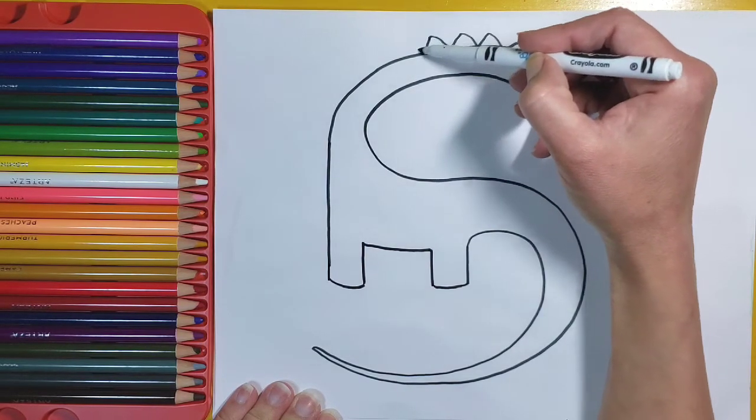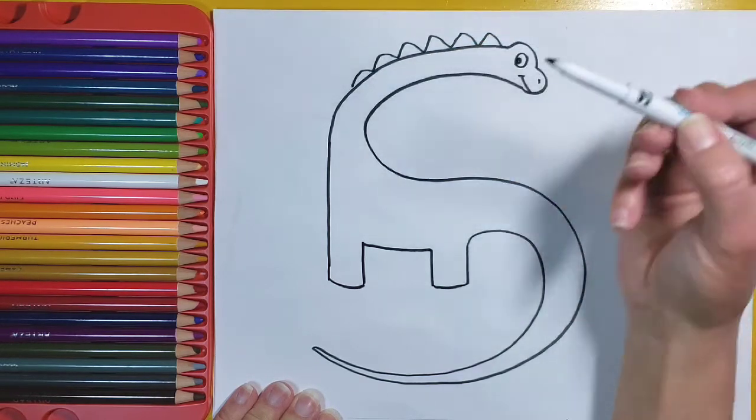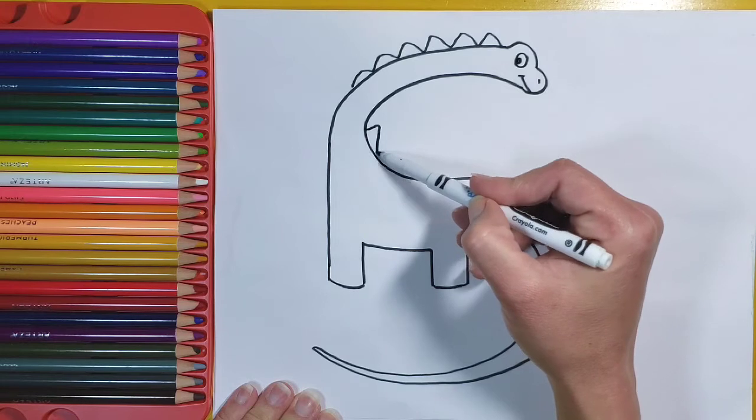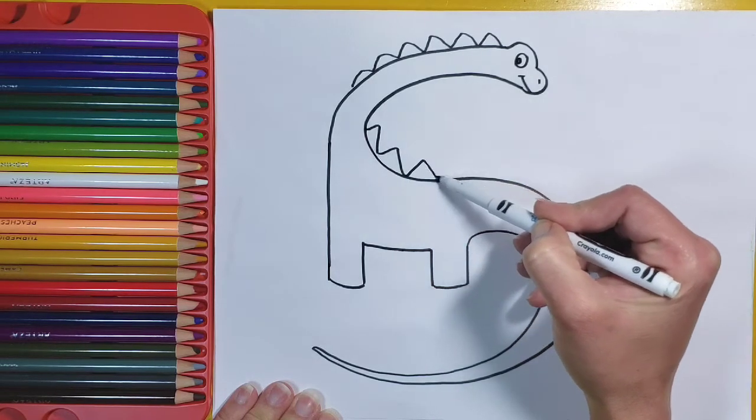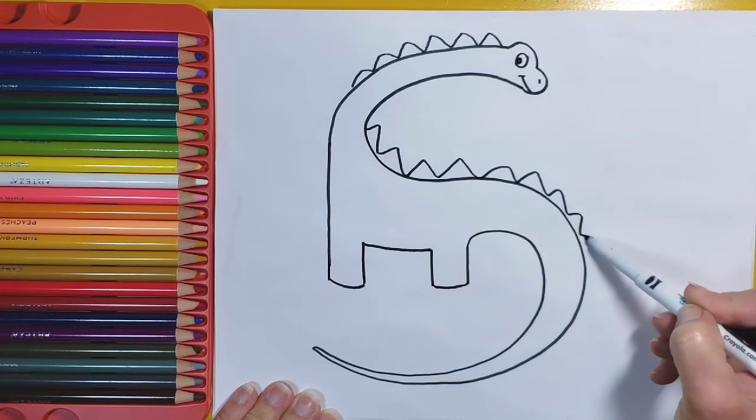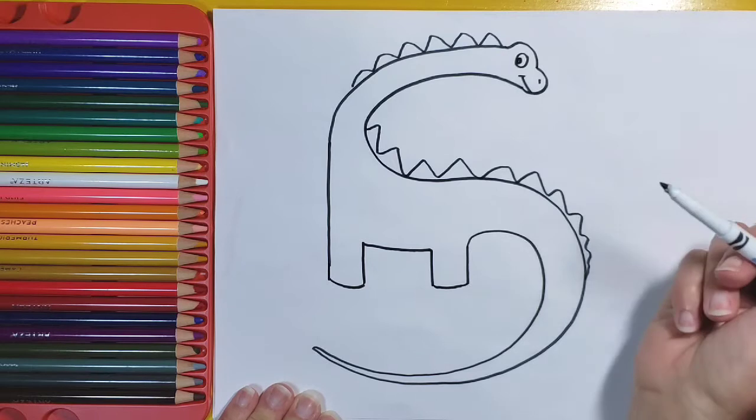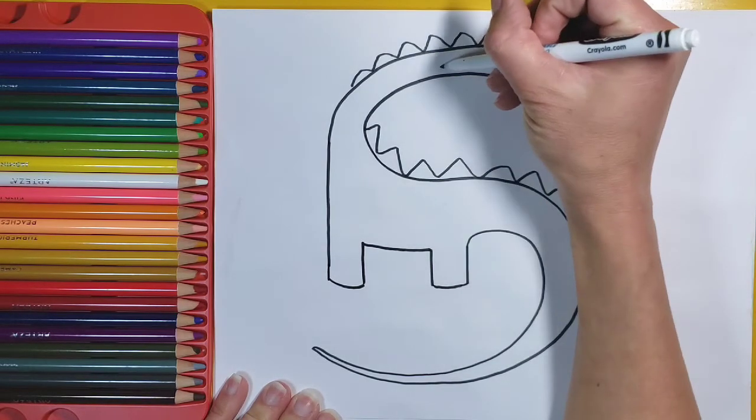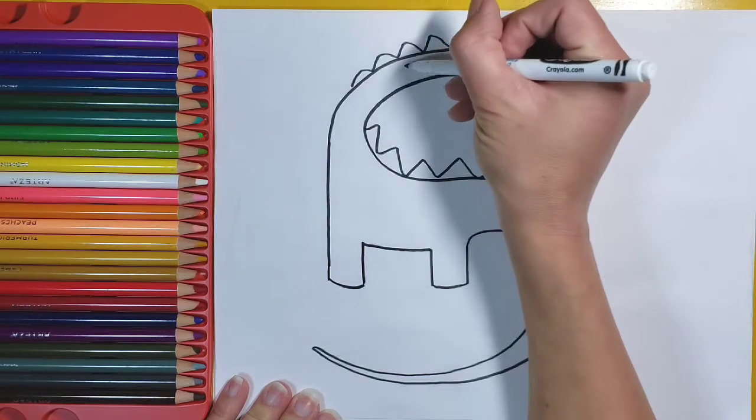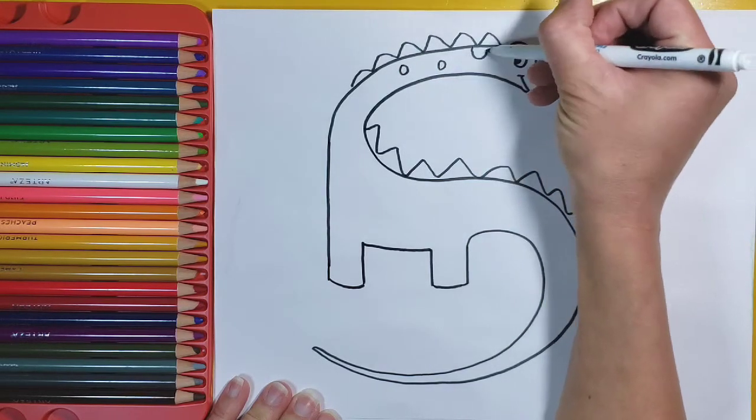That kind of go like this around on the back of the dinosaur like that. And then, I mean, if you want to, you can get creative and add stripes or polka dots. So maybe I'm going to add polka dots to my dinosaur just to make it a little bit more fun.